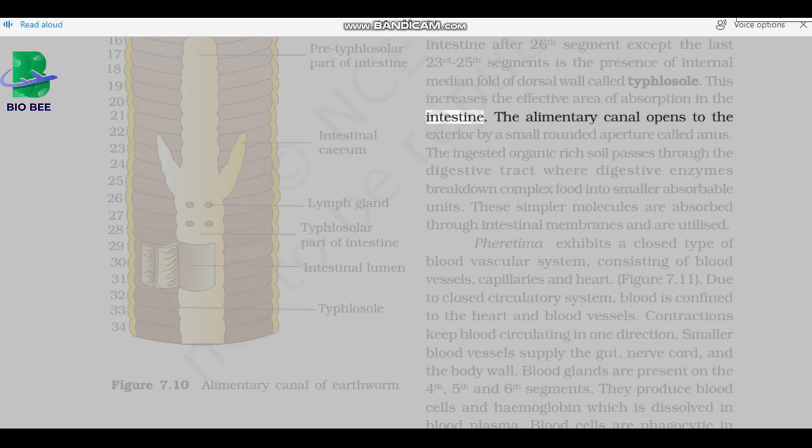The alimentary canal opens to the exterior by a small rounded aperture called anus. The ingested organic-rich soil passes through the digestive tract where digestive enzymes break down complex food into smaller absorbable units. These simpler molecules are absorbed through intestinal membranes and are utilized. Pheretima exhibits a closed type of blood vascular system, consisting of blood vessels, capillaries, and heart. Due to closed circulatory system, blood is confined to the heart and blood vessels. Contractions keep blood circulating in one direction.